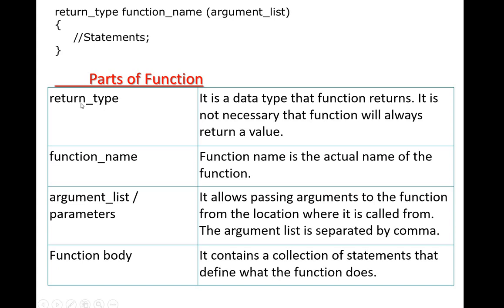There are different parts of the function. First is the return type, which is the data type that the function returns — it is not necessary that a function will always return a value. Second is the function name, which is the actual name of the function. For example, if you want to perform addition, you write a name like 'addition'. The argument list, or parameters, allows passing arguments to the function from the location where it is called, and parameters are separated by commas. Then there is the function body, which contains a collection of statements that define what the function does.